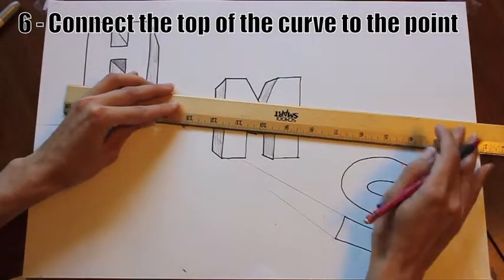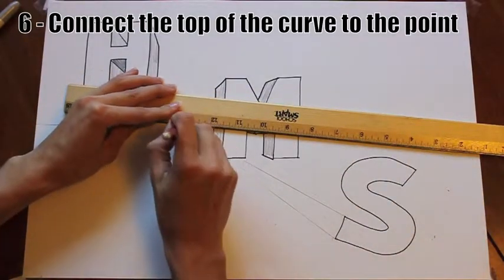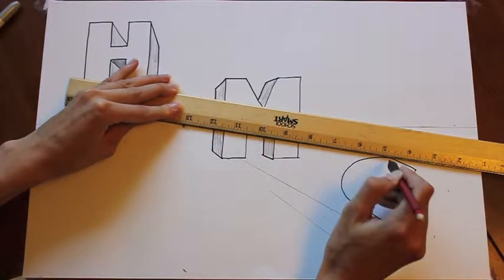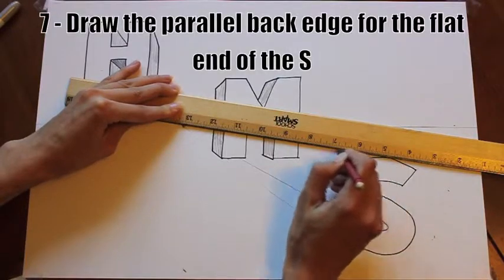To connect to the curve, you want to rotate your ruler from the vanishing point until it barely touches the top curve of the S. This is your tangent. This is the line you should draw.